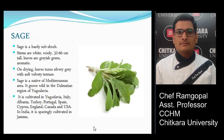Sage is a hardy sub-shrub with white woolly stems 32 to 60 centimeters tall and grayish-green aromatic leaves. On drying, leaves turn silvery gray with a soft velvety texture. Sage is native to the Mediterranean area and grows wild in the Dalmatian region of Yugoslavia. It is cultivated in Yugoslavia, Italy, Albania, Turkey, Portugal, Spain, Cyprus, England, Canada, and the USA — and in India it is cultivated in Jammu. It is used in stocks, stews, and various continental preparations.